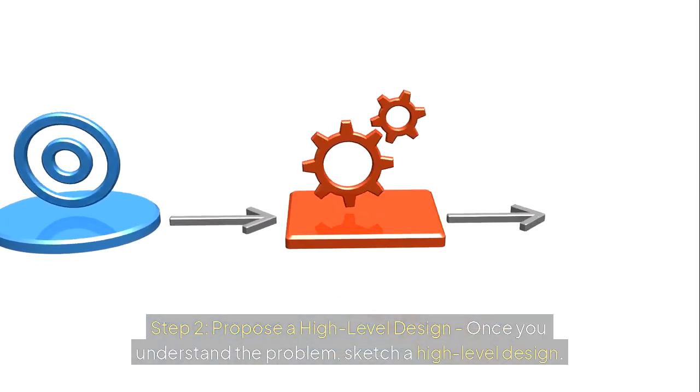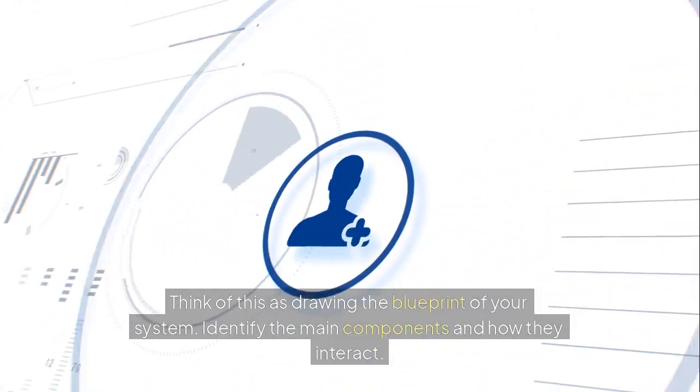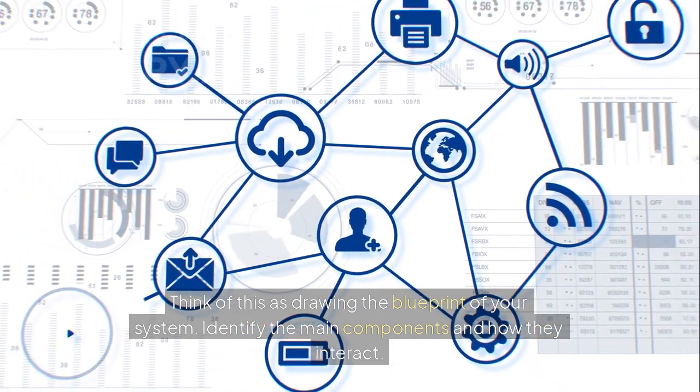Step 2: Propose a high-level design. Once you understand the problem, sketch a high-level design. Think of this as drawing the blueprint of your system. Identify the main components and how they interact.